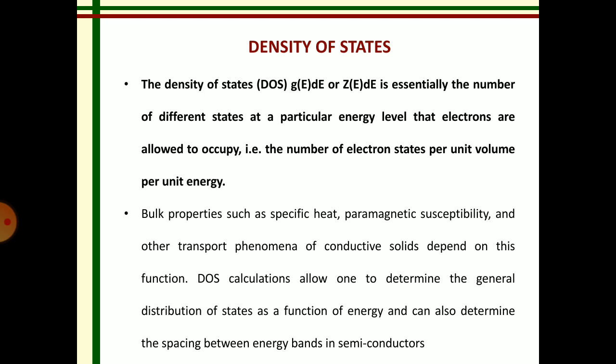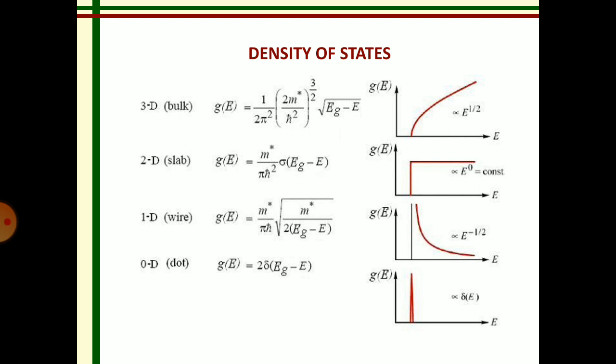Here we see the different values of density of states for various structures of nanomaterials. For a three-dimensional nanostructure, z(E) is equal to one over two pi squared, into (2m*/ℏ²)^(3/2), into the square root of (E_g minus E).